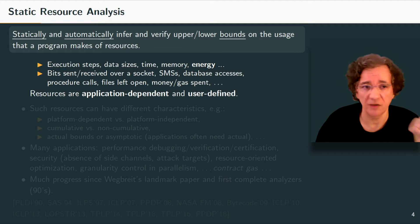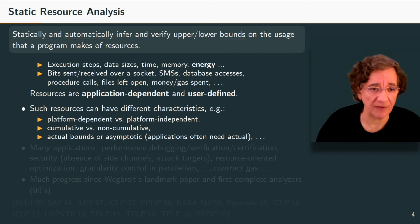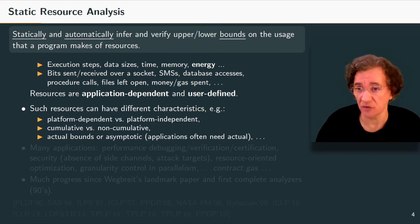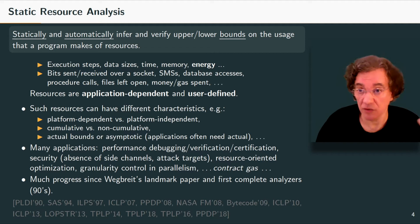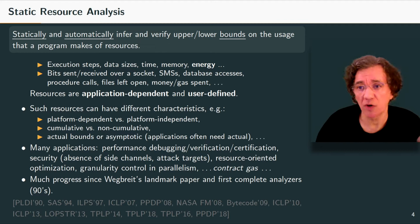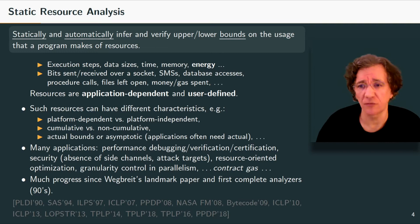Resources in general can have different characteristics: they can be platform-dependent or independent, cumulative or non-cumulative, and we may want actual bounds with concrete constants or asymptotic bounds. Applications often need the actual bounds. Resources have many applications: performance debugging, performance verification, certification of performance, security, absence of side channels, identification of attack targets, resource-oriented optimization, granularity controlling parallelism — which was our first motivation — and of course, contract gas. Much progress has been made since Wegbreit's landmark paper, with the first complete analyzers in the 90s and a lot of recent work.